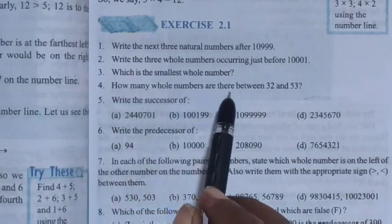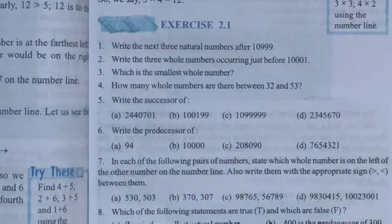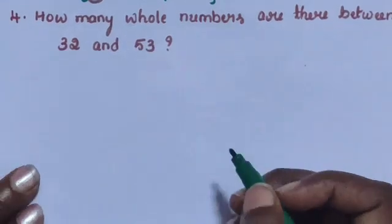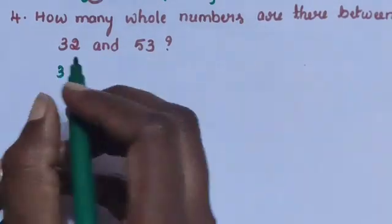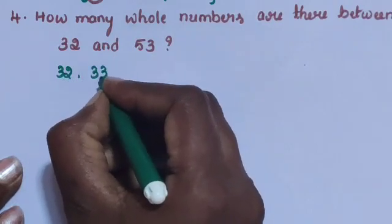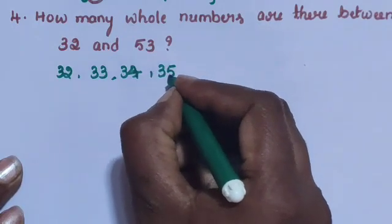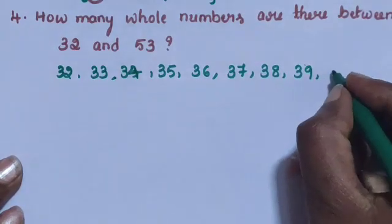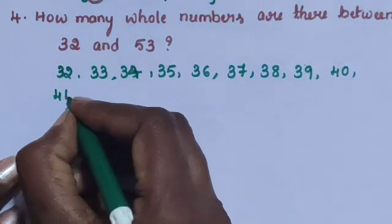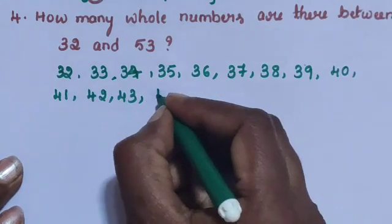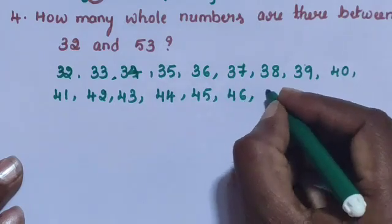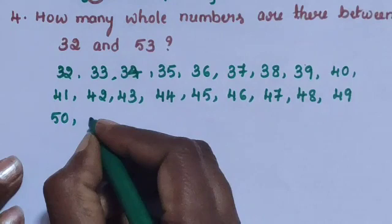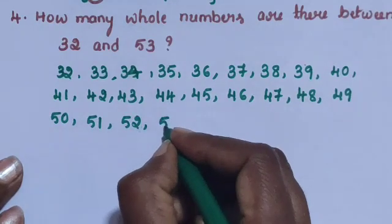Question number 4: How many whole numbers are there between 32 and 53? Writing them out: 33, 34, 35, 36, 37, 38, 39, 40, 41, 42, 43, 44, 45, 46, 47, 48, 49, 50, 51, 52.